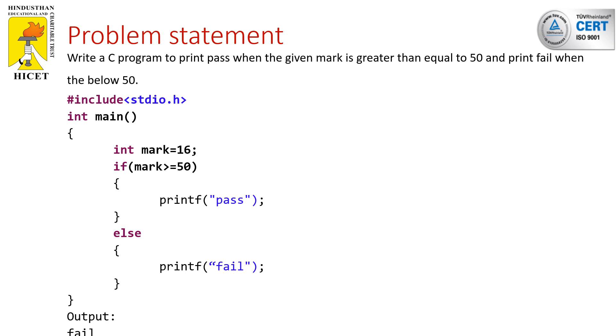For example, write a C program to print pass when the given mark is greater than or equal to 50 and print fail when the mark is below 50. In this program, the value of mark is 16. 16 greater than or equal to 50. The condition is false, so statements inside the else-block gets executed.